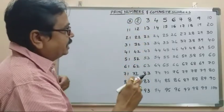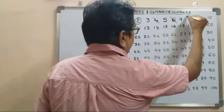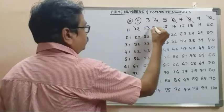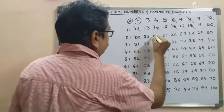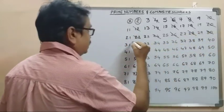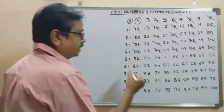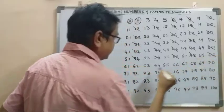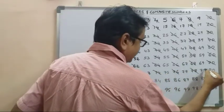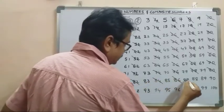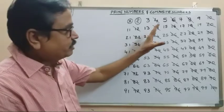Now for the multiples of 2 up to 100: 2, 4, 6, 8, 10, 12, 14, 16, 18, 20, 22, 24, 26, 28, 30, 32, 34, 36, 38, 40, 42, 44, 46, 48, 50, 52, 54, 56, 58, 60, 62, 64, 66, 68, 70, 72, 74, 76, 78, 80, 82, 84, 86, 88, 90, 92, 94, 96, 98, 100. We cancel all multiples of 2 from the table.